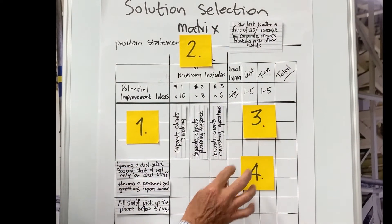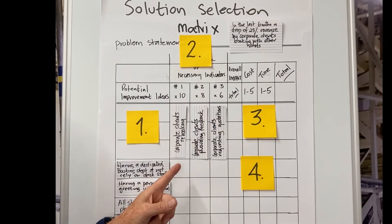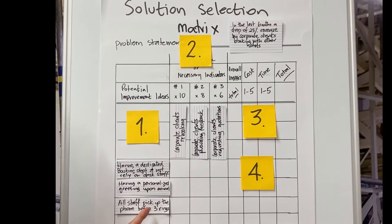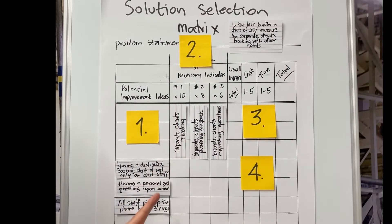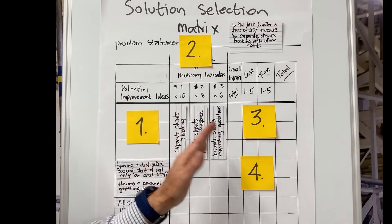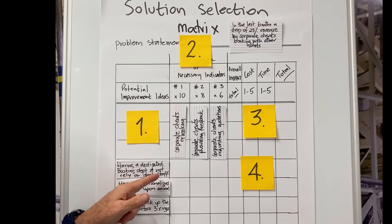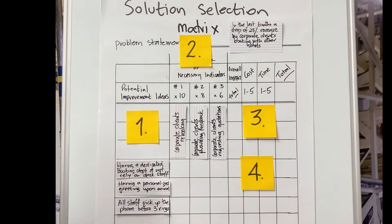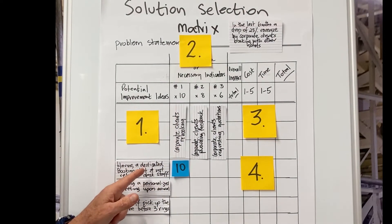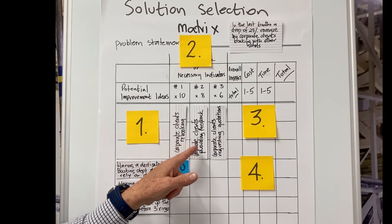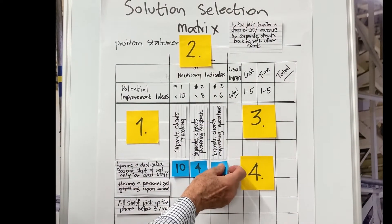Step number four is where we assess the connection of the improvement idea to the success criteria. In other words, what is the relevance between the improvement idea and the success criteria on a scale one to 10. If there's a very good relevance or very good connection, it's a 10. If there's very little relevance, it might be a one. So for example, having a dedicated booking department and not relying on desk staff, how does that relate to corporate clients rebooking? That's scored very high, scored a 10. Remember scale one to 10. Having dedicated booking department and not relying on desk staff, how does that relate to getting feedback? Very little and requesting quotations could be even stronger.